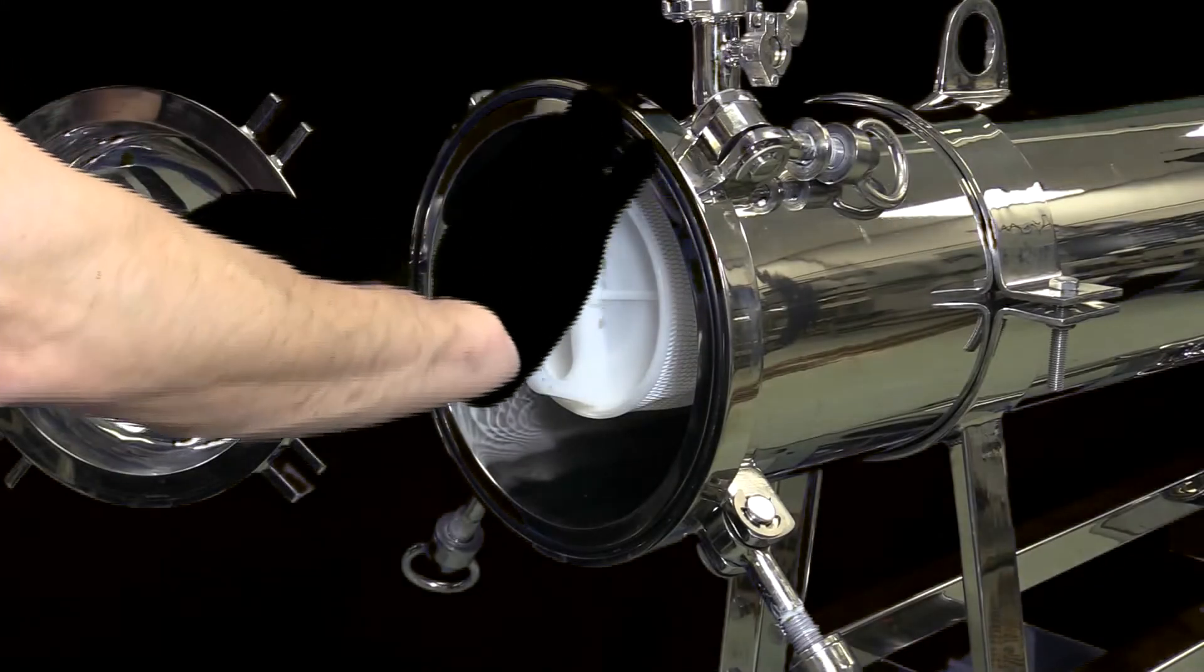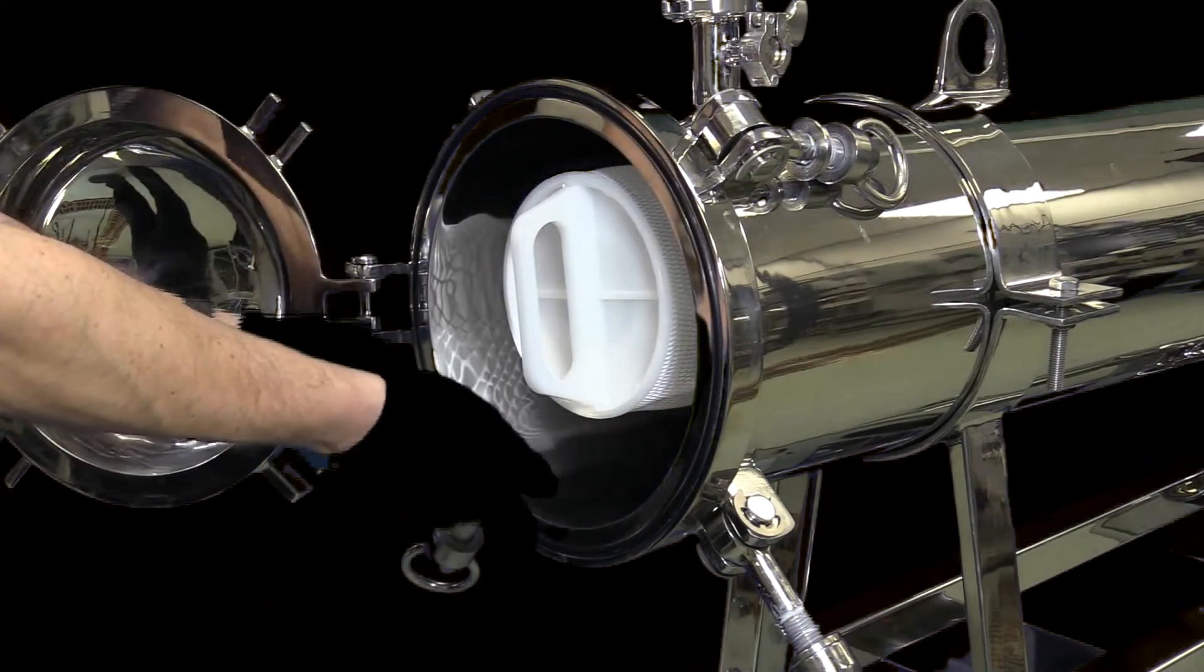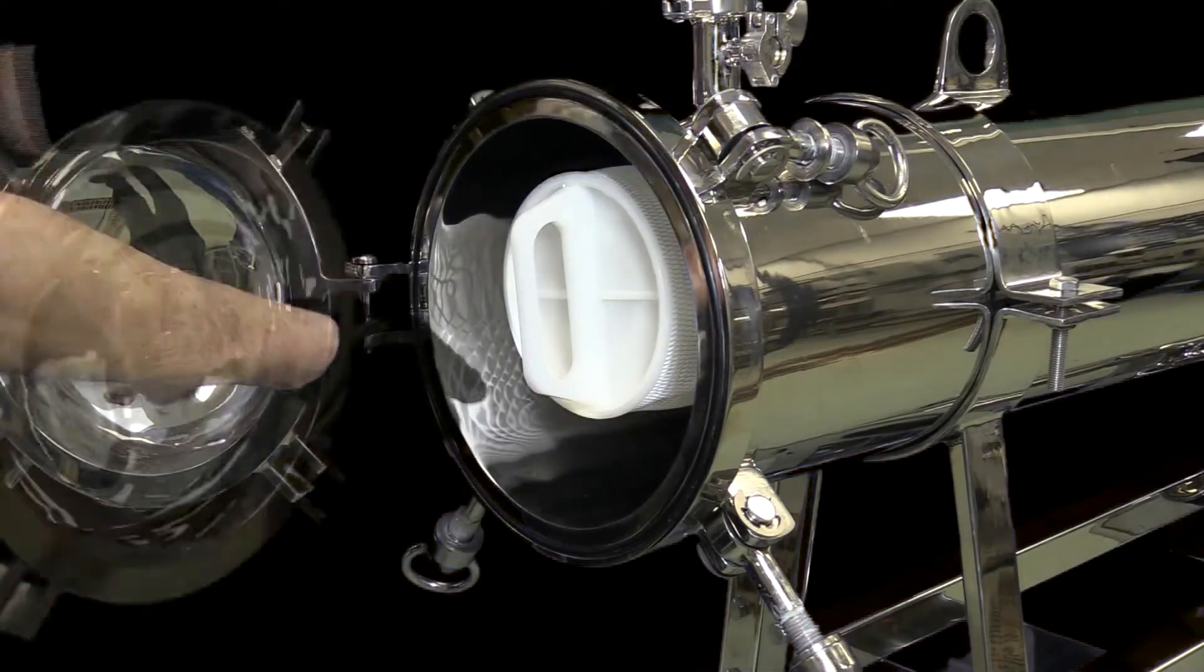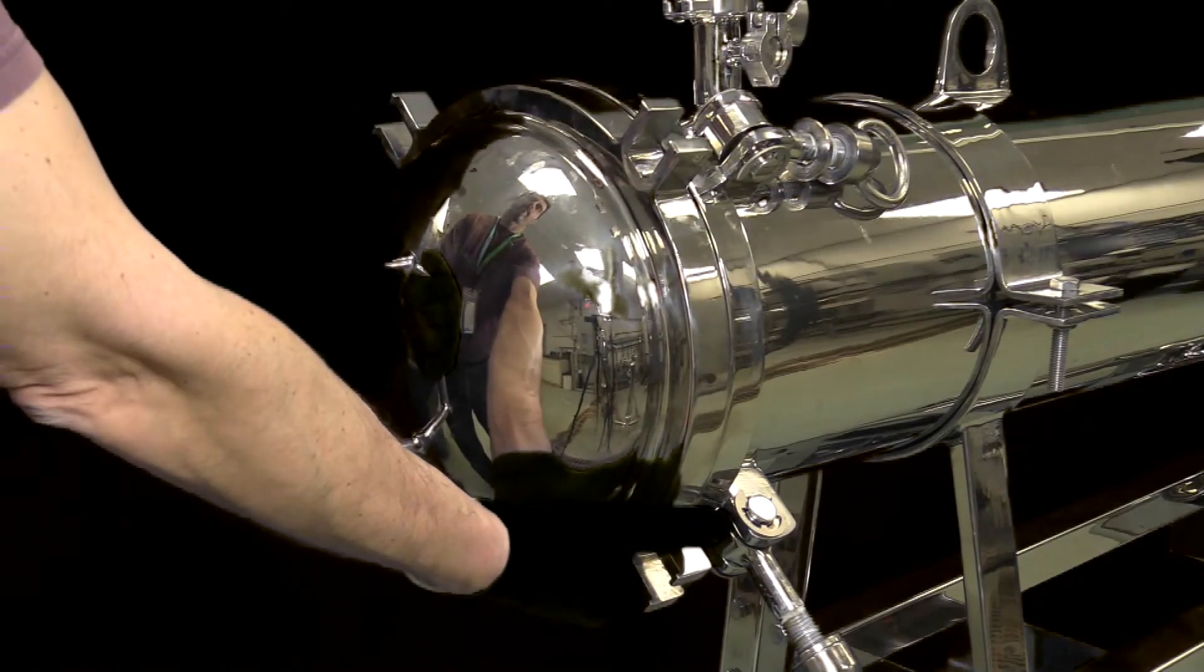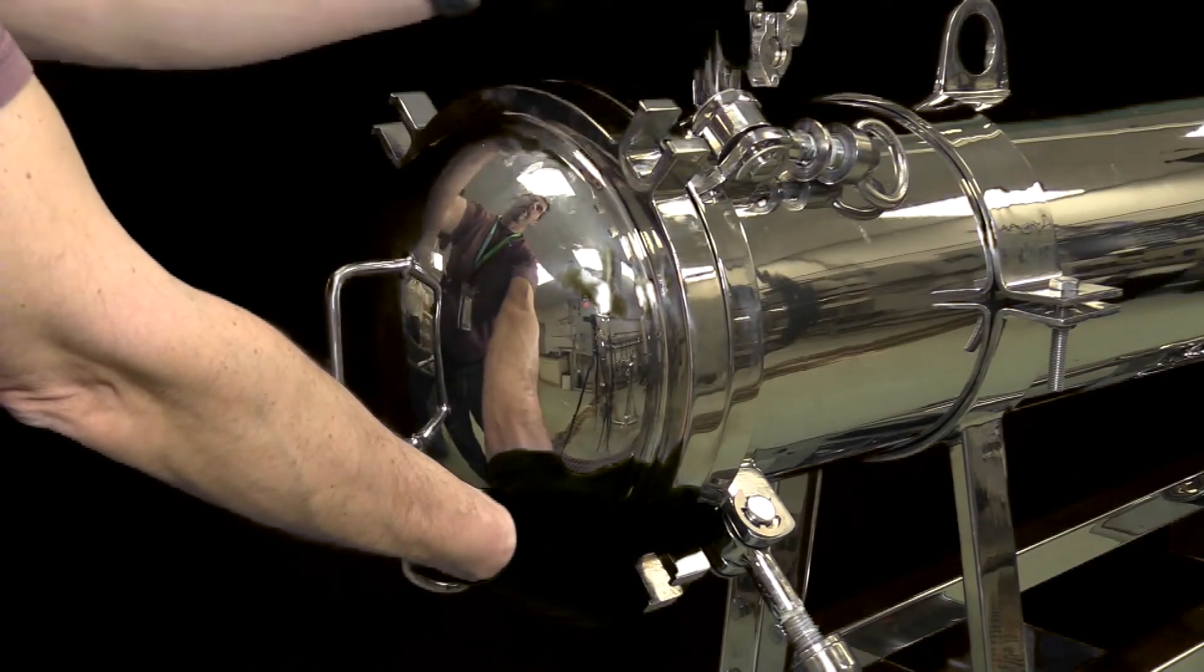Ensure the o-ring is properly seated in the o-ring groove on the housing. Grasp the lower right side of the housing lid and gently lift up until the housing lid is roughly aligned with the housing.